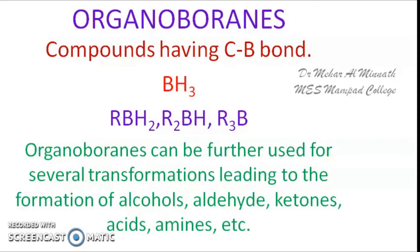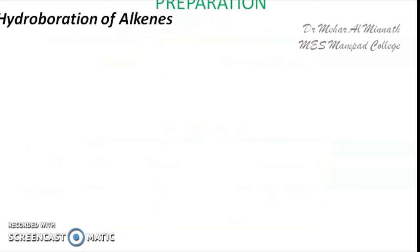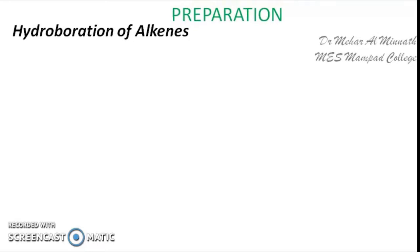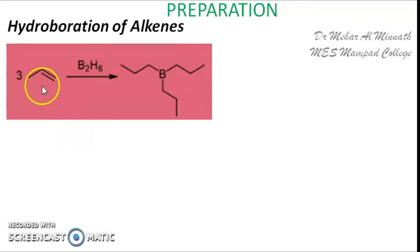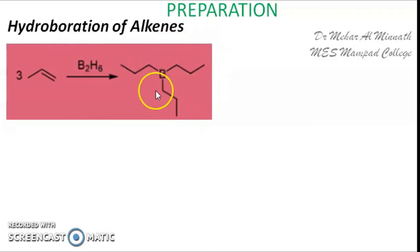Let us see how organoboranes are prepared. Organoboranes are basically prepared from alkenes, and that particular method is called hydroboration — that is, the preparation of organoboranes from alkenes via hydroboration. That means you are adding a hydrogen and a boron to the double bond of the alkene. Here we have an example: you have an alkene.